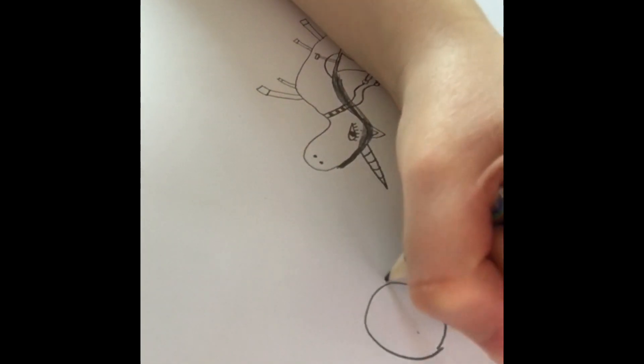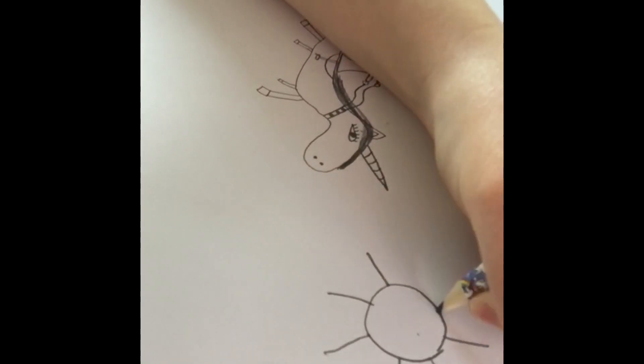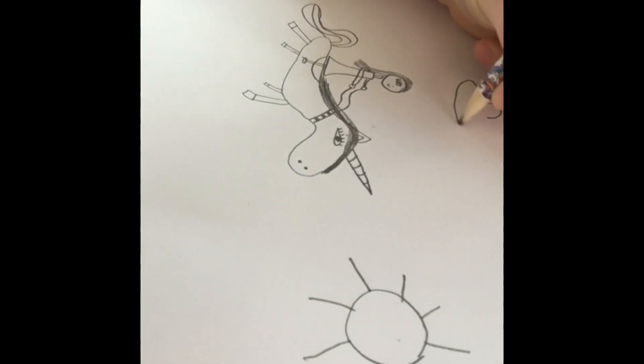Then we can draw a background. I'm doing a sunny background because in my imagination it's daytime. But you can draw one like a night sky.